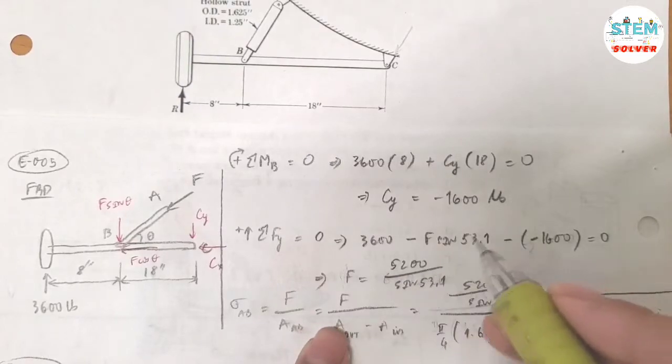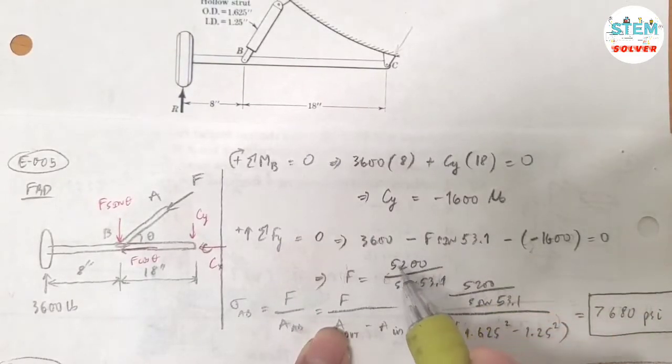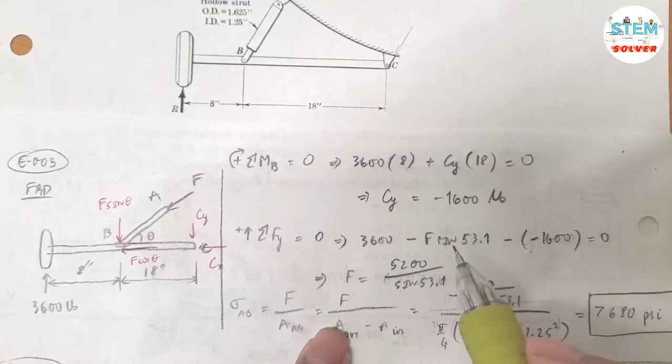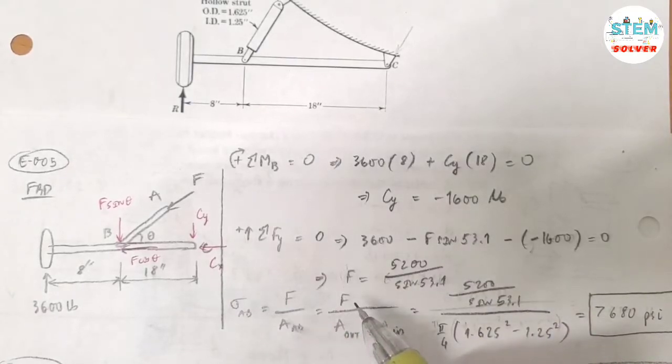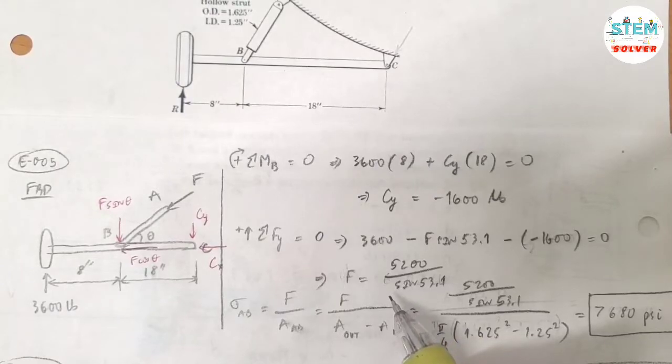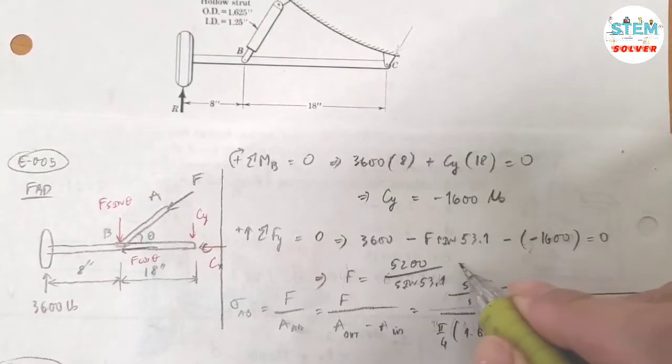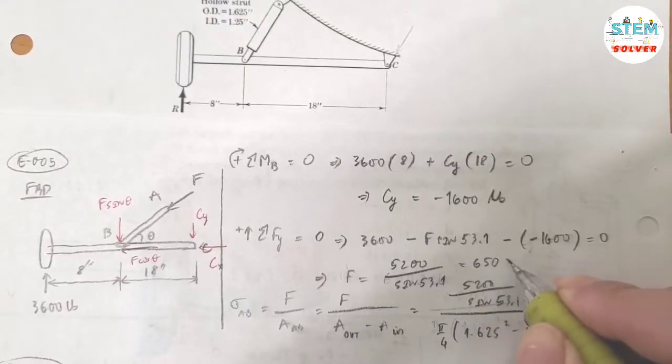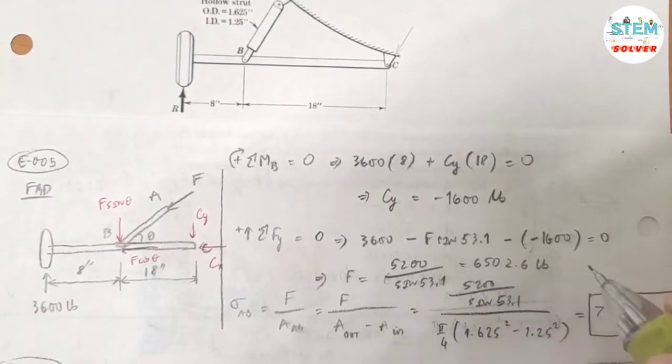You can calculate this out, but I like to leave it like this because I don't want to round it in the intermediate steps. So let me see, if I am about to calculate this one I will get 6502.6 pounds.